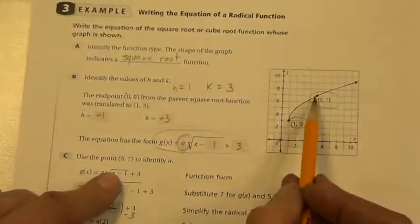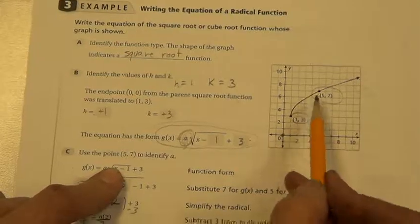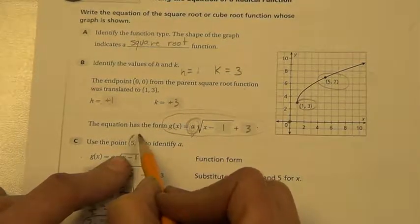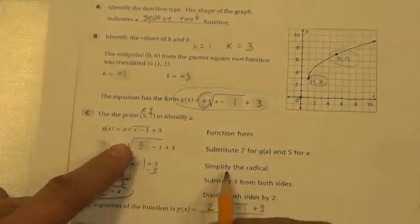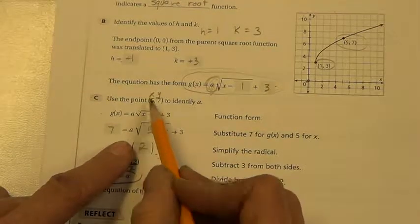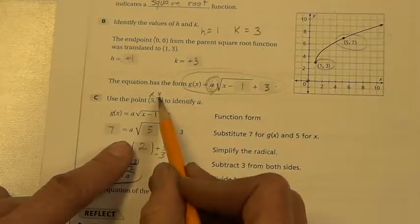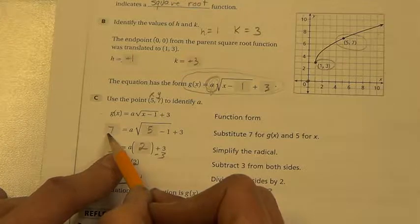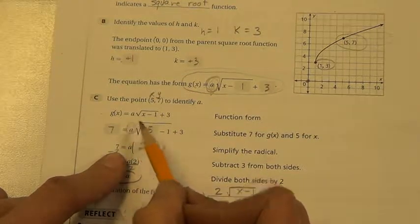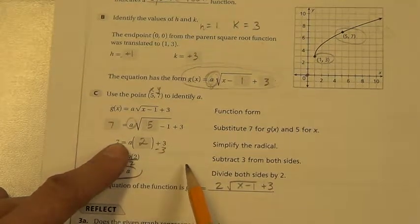So now replace the x value with the 5. The y value, the g of x, with the 7. And now you solve for a. In doing that, we can simplify. 5 minus 1 is square root 4. The square root of 4 is 2.